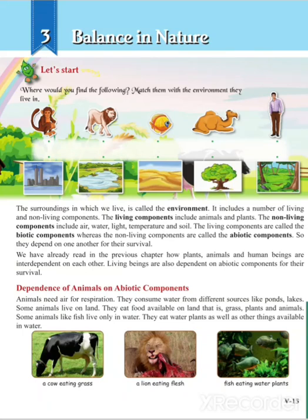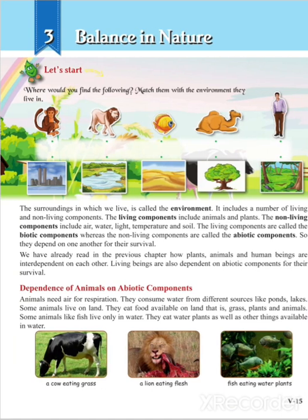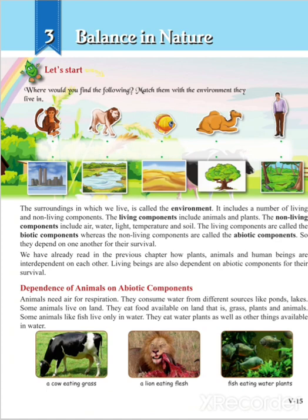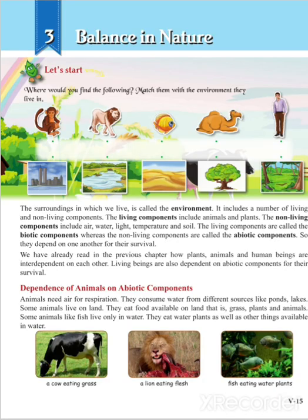Hello friends, today we're going to see the next lesson: Balance in Nature. The surrounding in which we live is called the environment. The environment is made up of two components: biotic components and abiotic components. All living things come under biotic components, and all non-living things like air, water, sunlight, temperature, and soil come under abiotic components.